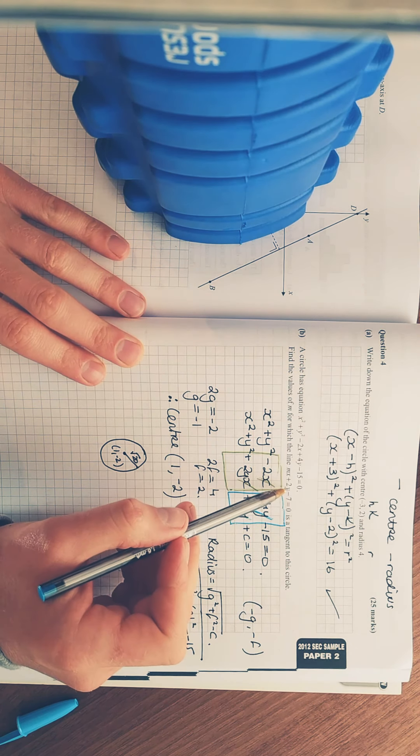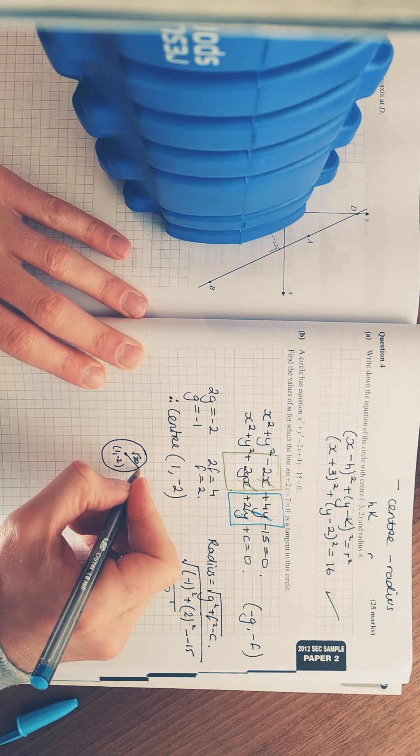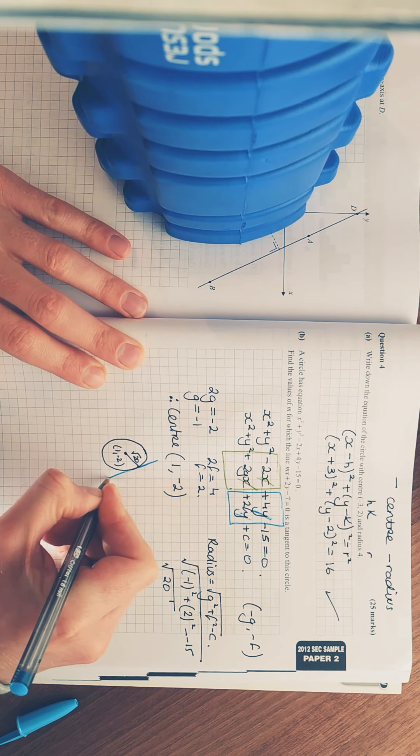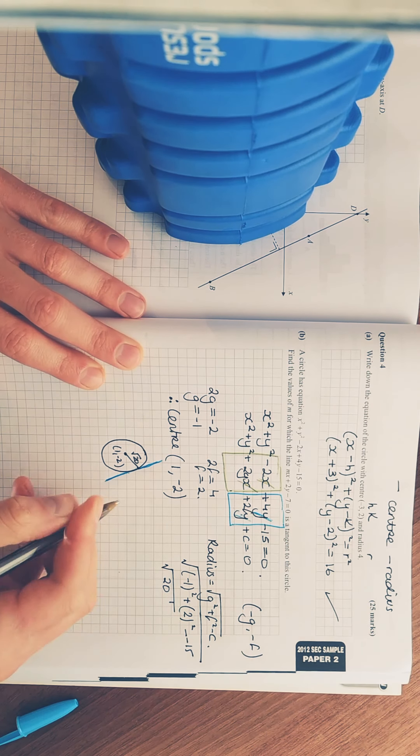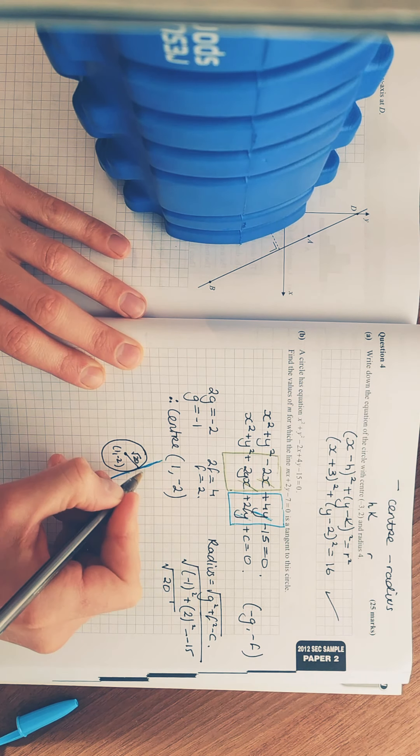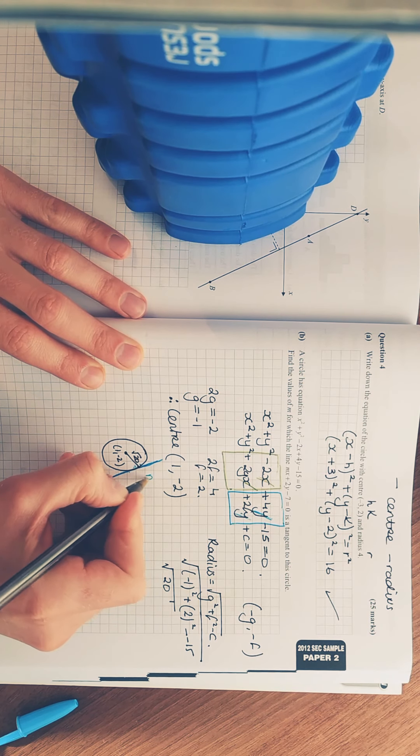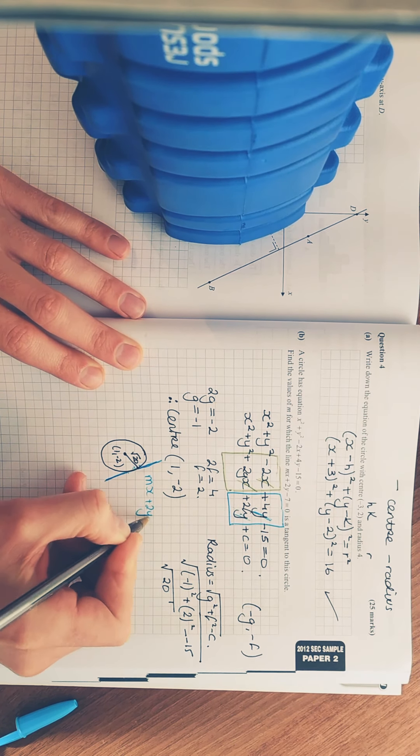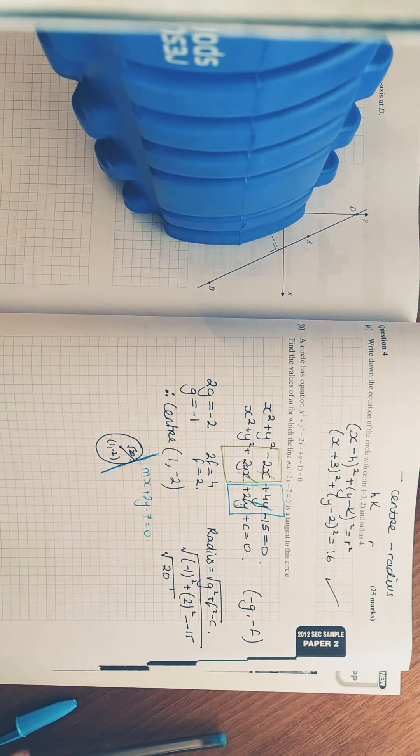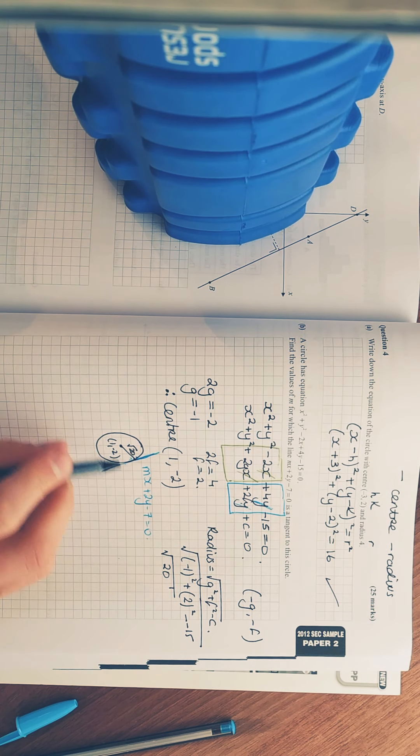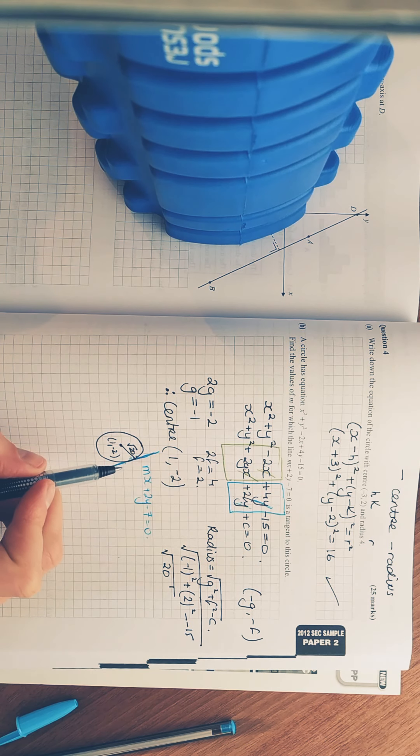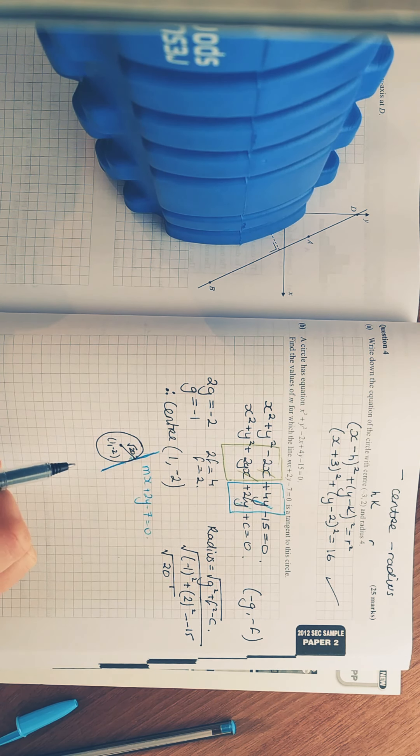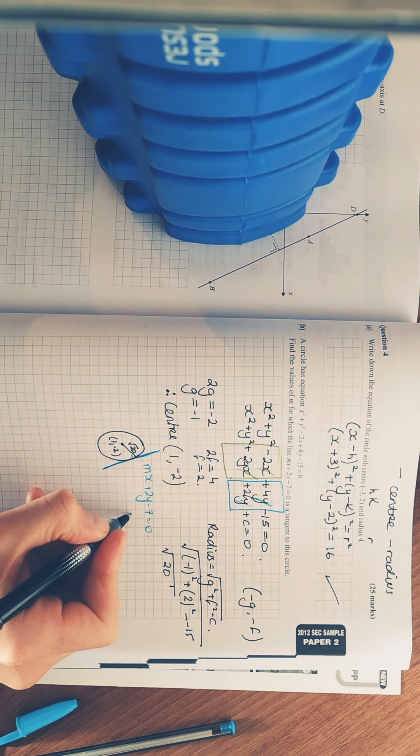Now, what is this next bit? Find the values for m for which this line is a tangent. So, always try to be picturing these. Always work out your centre and your radius. Take it from there. And we'll start piecing together. Here's my tangent. Touches the circle at one point at a 90 degree angle. mx plus 2y minus 7 is equal to 0. And once we see that, we're working out the value of m. We've got everything in place.